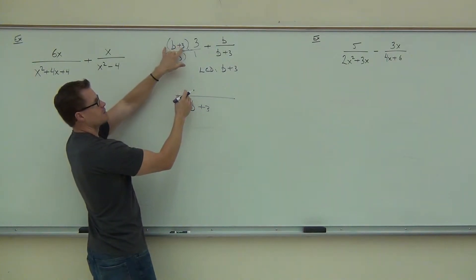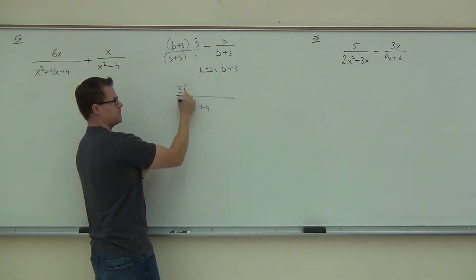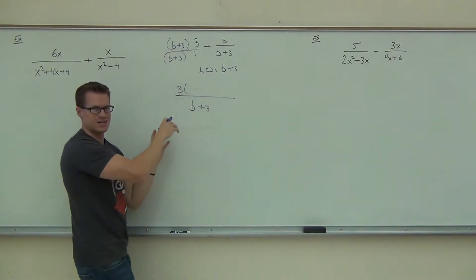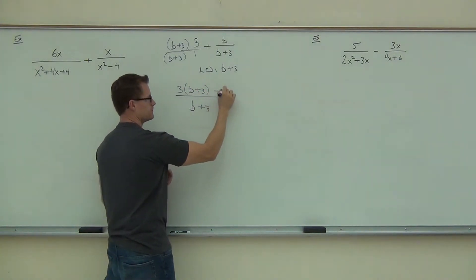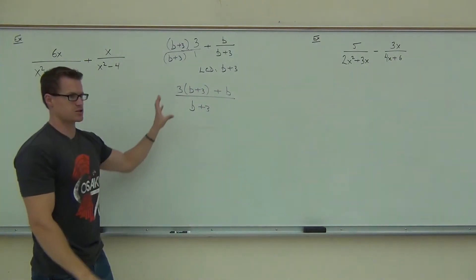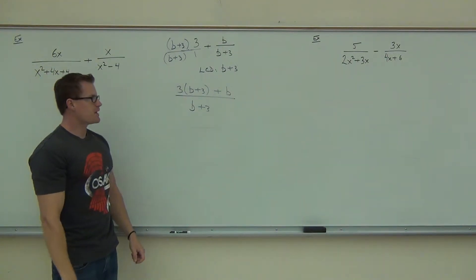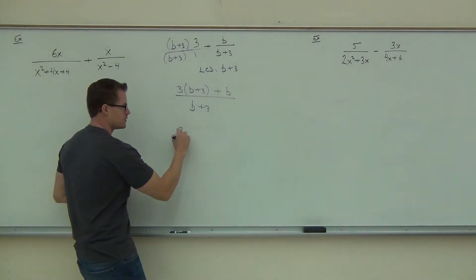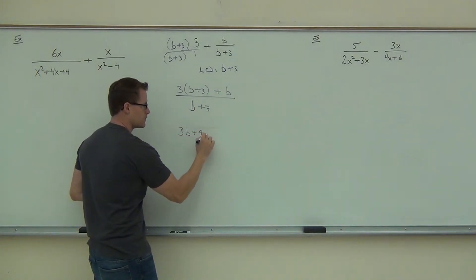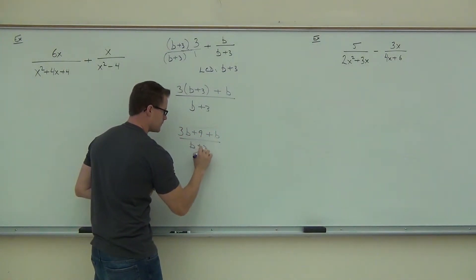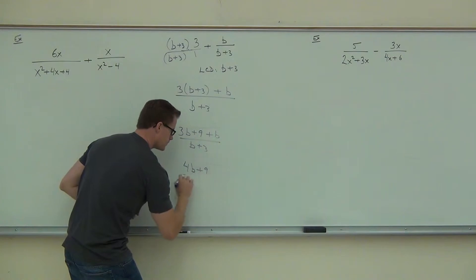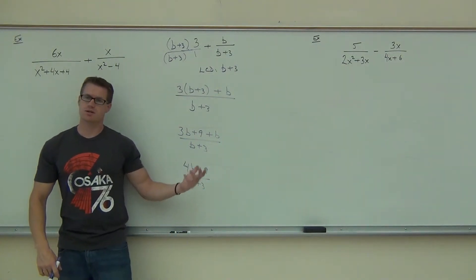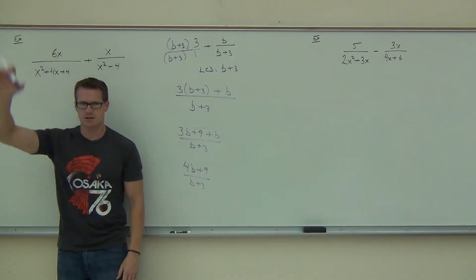On the numerator, we're going to have B plus 3 times 3. I'm just going to write the 3 first because that's easier to see that we need to distribute, that's the only reason. And then the plus B, that's our second numerator. After that, we certainly can't simplify, we're going to distribute. We'll combine some like terms. We'll try to factor, but none of this can factor, and so you're done. How many of you got that far? That's great, that's fantastic, good for you.